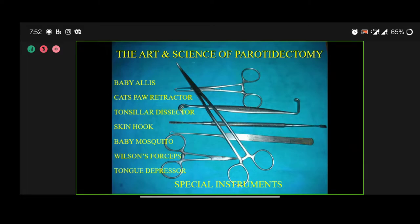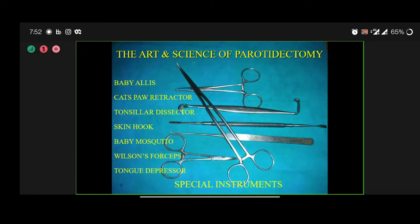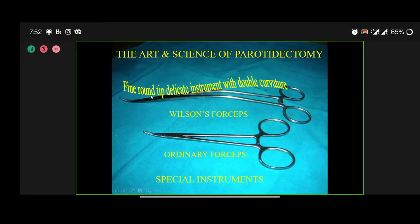We need very specific, delicate instruments: baby Allis, Weitlaner retractor, concealer dissector, skin hook, baby mosquitoes, Wilson forceps, tongue depressor. The tongue depressor can be very useful for retracting the parotid mass. Wilson's forceps has a round tip — a delicate instrument with double curvature, unlike an ordinary forceps. This double curvature from tip to end is very useful and adaptable to the body of the parotid when tracing the nerve.